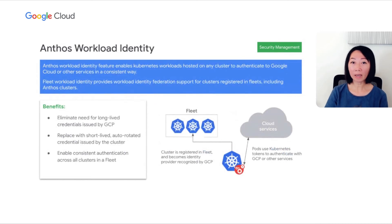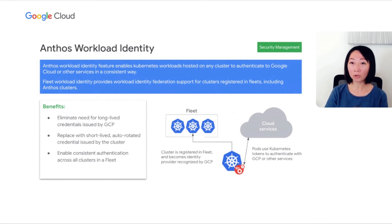Anthos workload identity feature enables Kubernetes workloads hosted on any cluster to authenticate to Google Cloud or other services in a consistent way. We have extended the GKE workload identity concept to Anthos platforms on-prem and in multi-clouds. The workload identity federation feature eliminates the need for long-lived credentials and replaces them with short-lived, auto-rotated credentials. It enables consistent authentication across all clusters, helping application developers connect applications to essential services more easily, while also helping platform admins maintain governance across clusters.